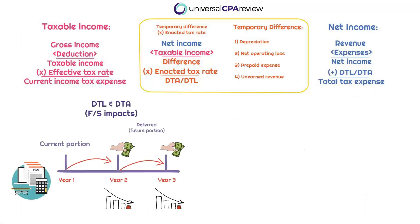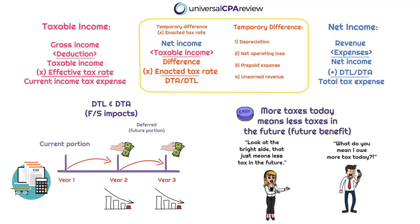So if we have a deferred tax asset, instead of simply allocating it, we're going to think of this DTA as a tax benefit. So if we are recognizing more tax today, that would mean that we have a benefit in the future. At first glance they're going to be like, what do you mean I owe you more tax? But look on the bright side — at least we owe less in the future. So that deferred tax asset will represent the income tax benefit on the balance sheet.